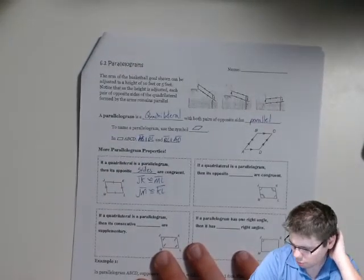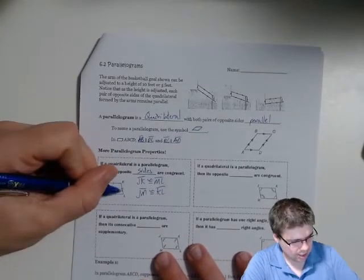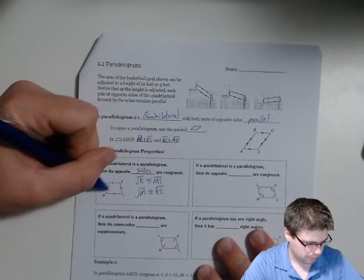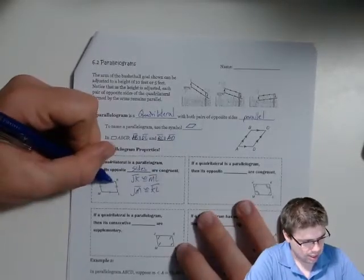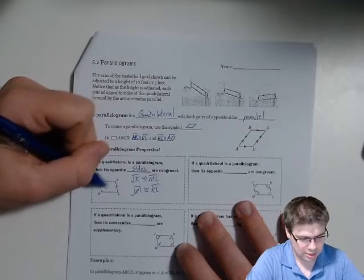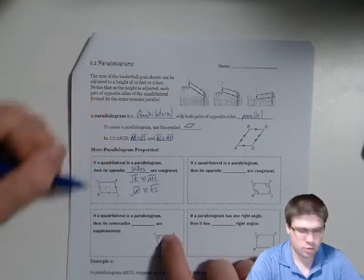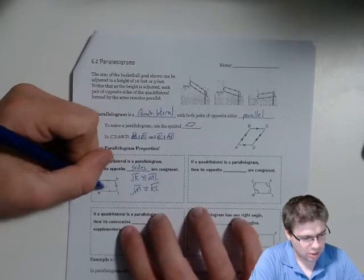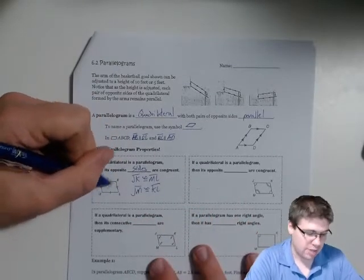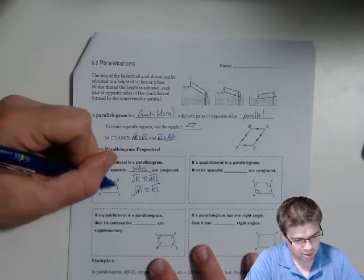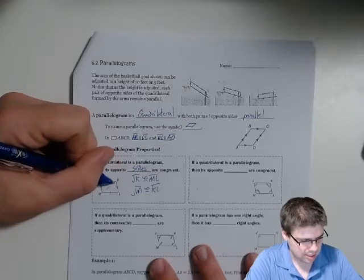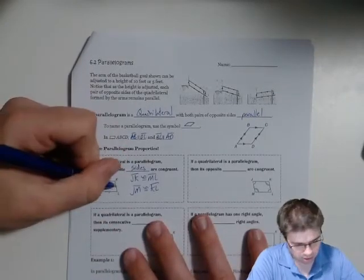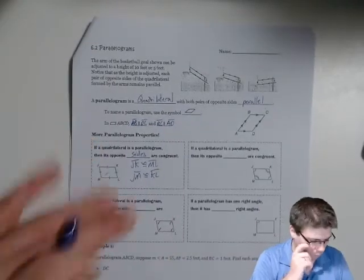We could do a proof with this. If we split the parallelogram into a couple of triangles, the third side would be shared by the reflexive property. We can say side-side-side, that those two triangles are congruent. With parallel lines cut by a transversal, we know these angles are supplementary, and from that we can ultimately prove that the opposite sides are congruent through triangles.